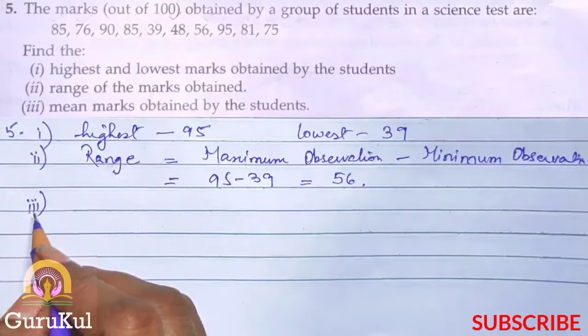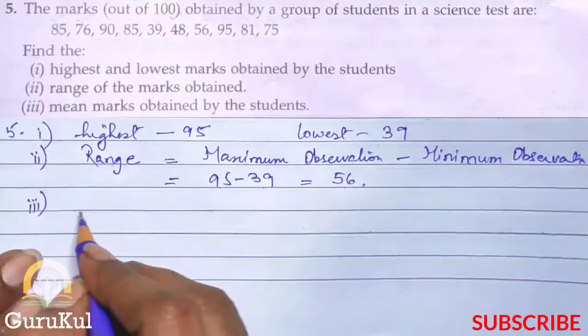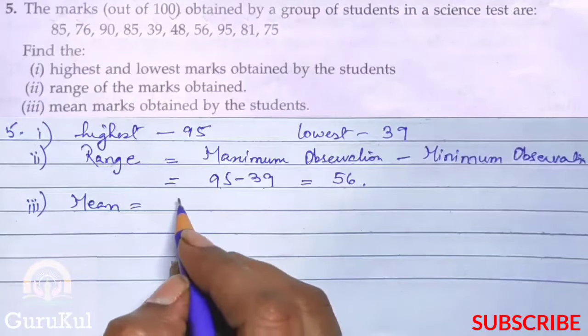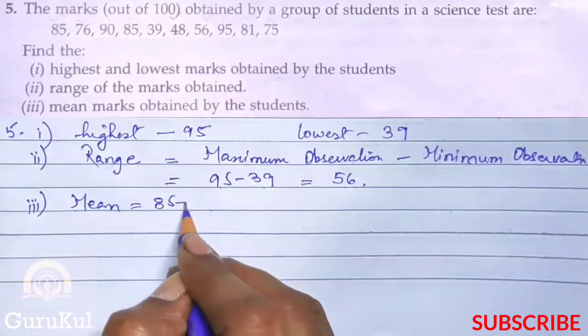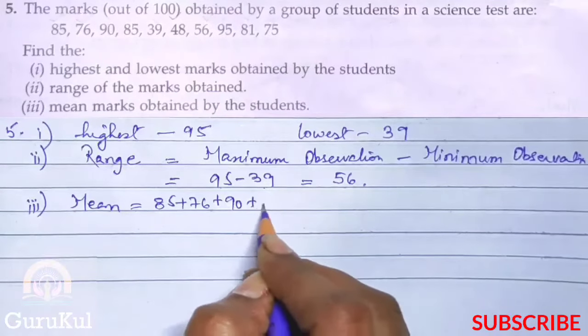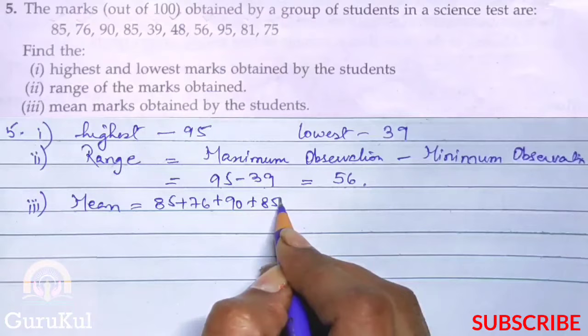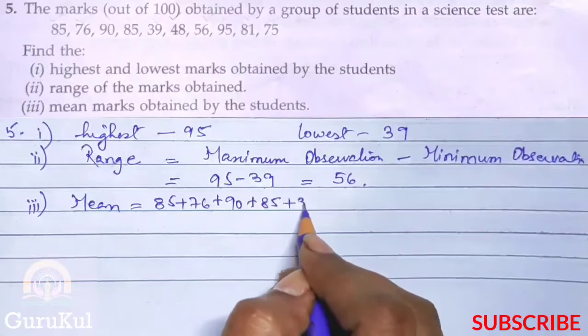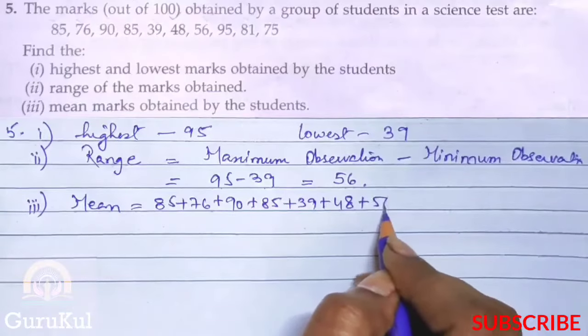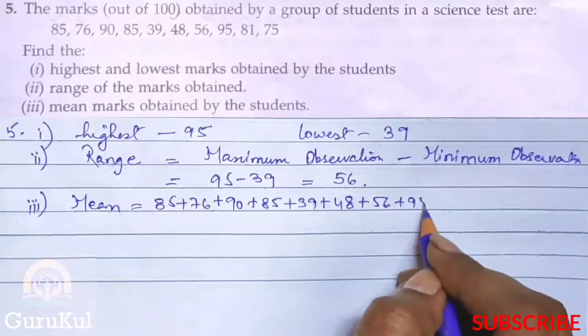Now third part: we have to find the mean marks obtained by the students. So mean is equal to 85 plus 76 plus 90 plus 85 plus 39 plus 48 plus 56 plus 95 plus 81 plus 75.